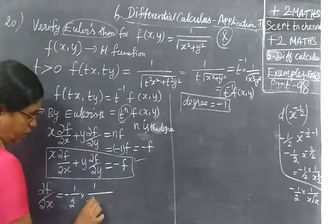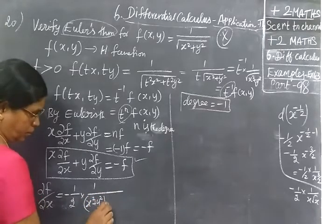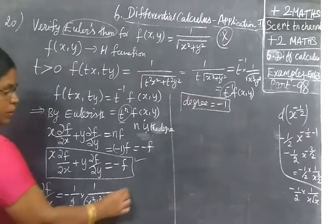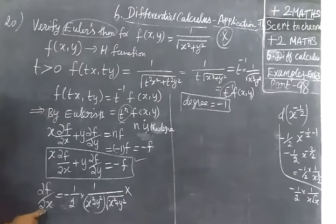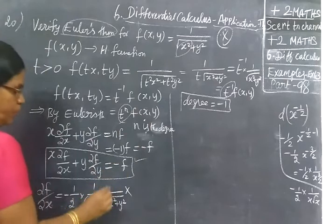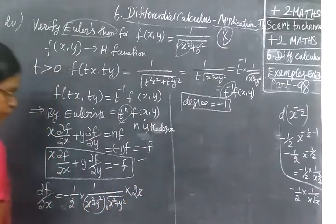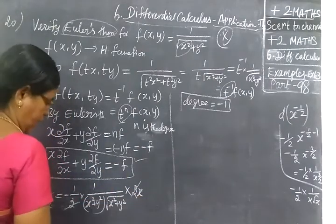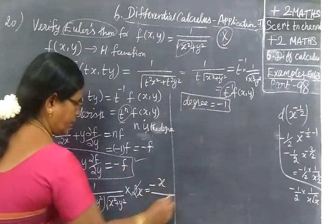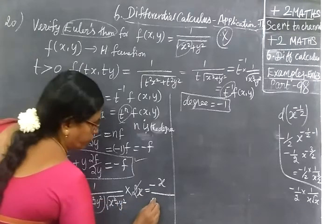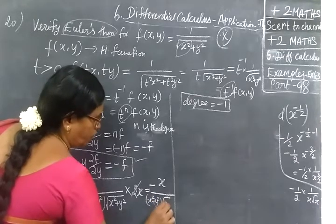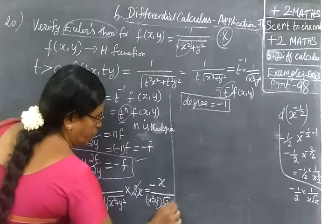Minus of 1 by x root, so -1/(x²+y²)^(3/2) × 2x. So you are writing the remaining -x/(x²+y²)√(x²+y²).